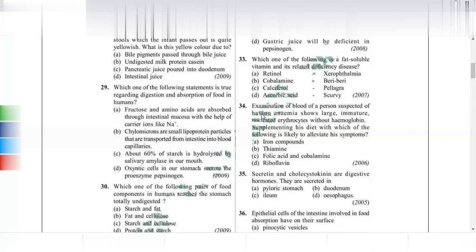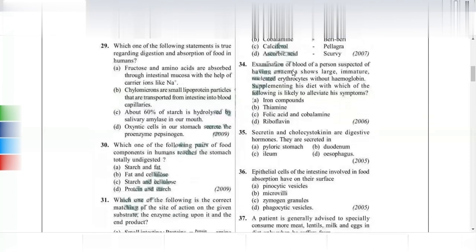Secretin and cholecystokinin are digestive hormones secreted by Brunner's glands, which are located in the submucosa of the duodenum. They stimulate the release of bile juice and pancreatic juice. Brunner's glands in the duodenum are a very important and frequently asked exam topic.